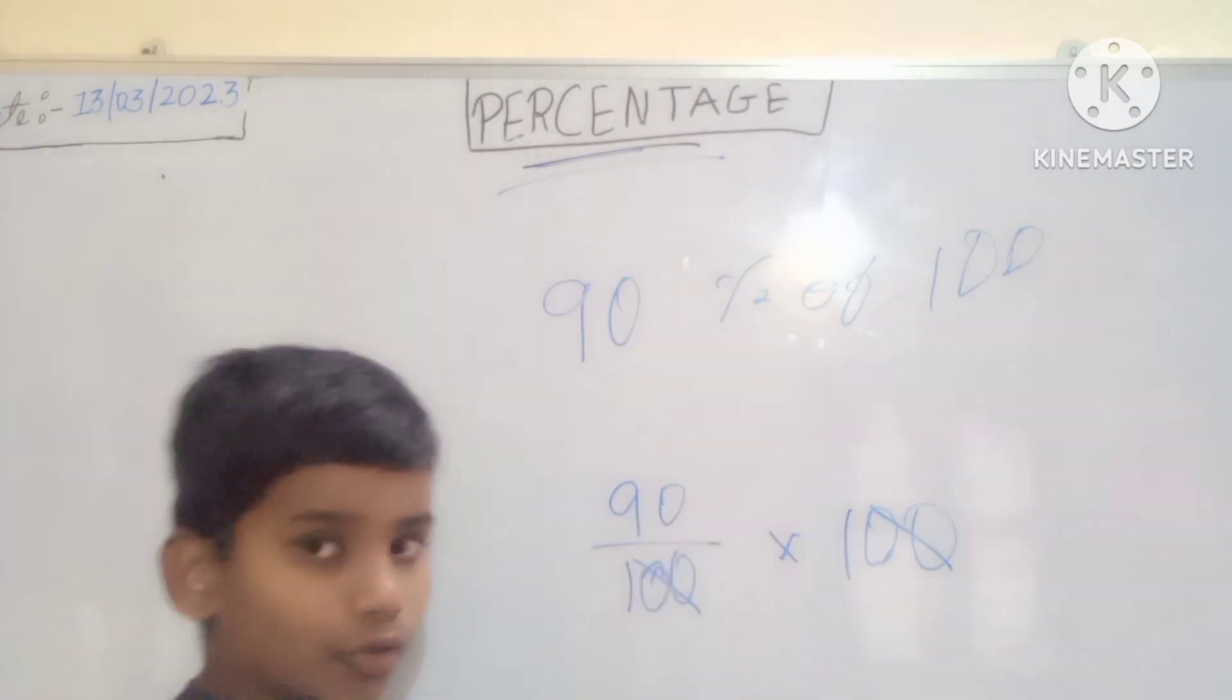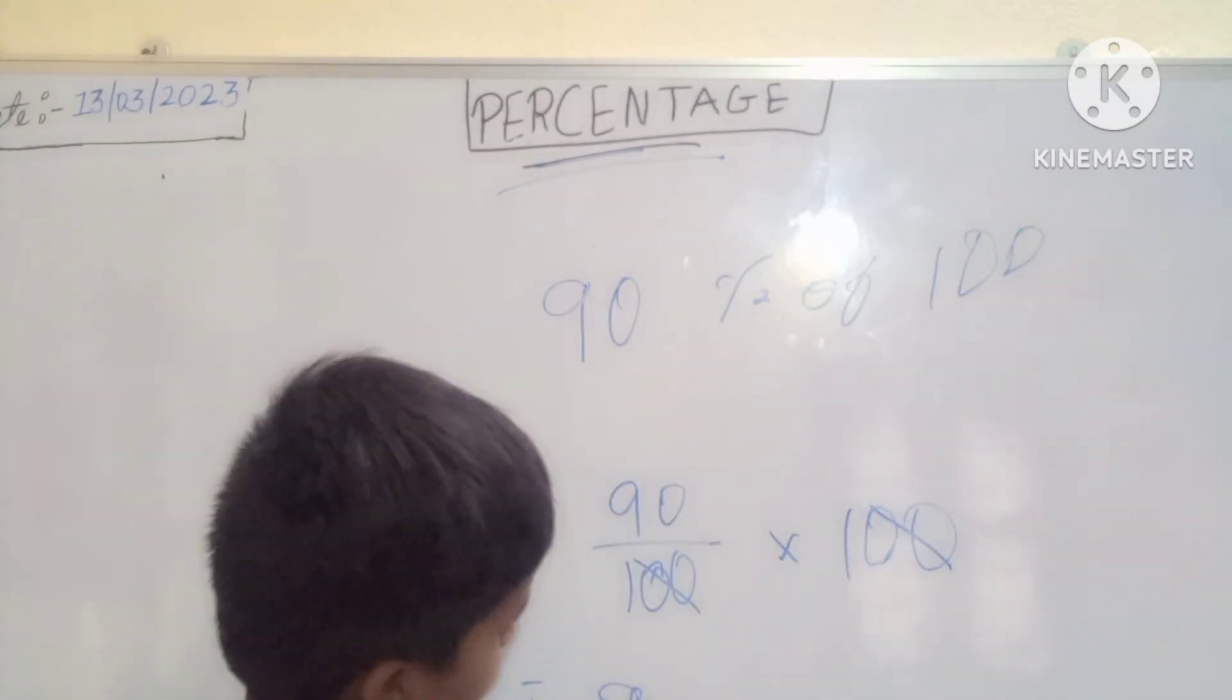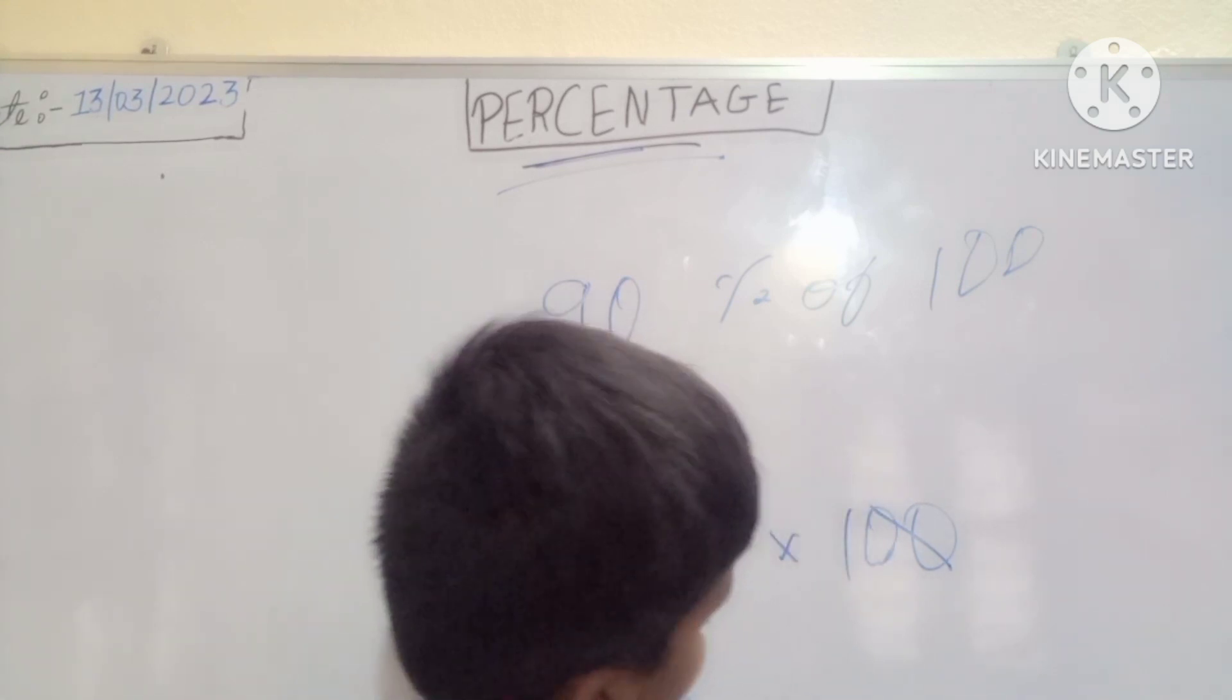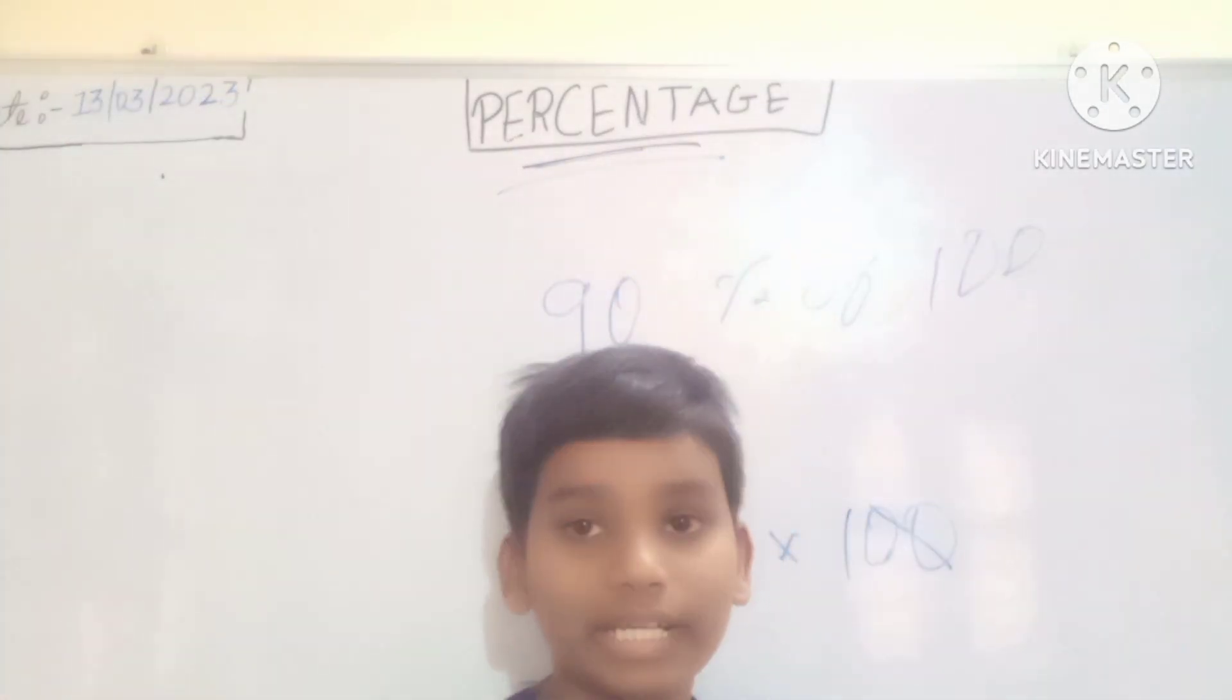90 is left over means you got 90 marks out of 100. Did you understand, or are you confused? Yes, you got 90 marks out of 100. Is it simple? Yes it is simple.